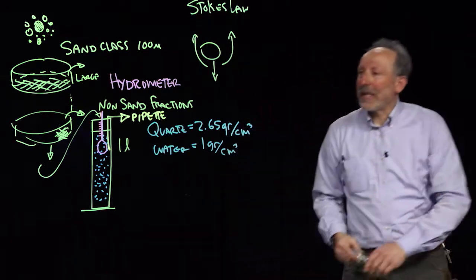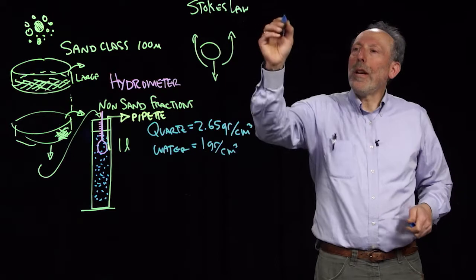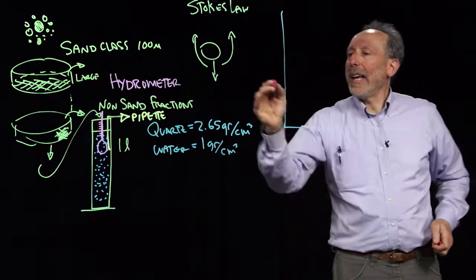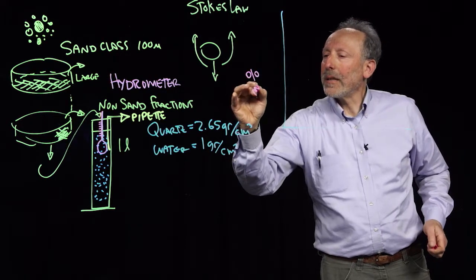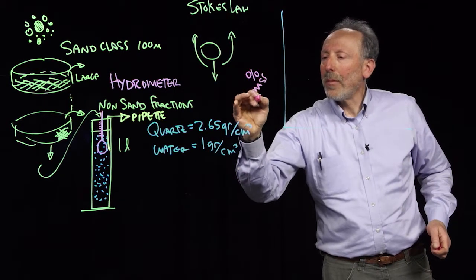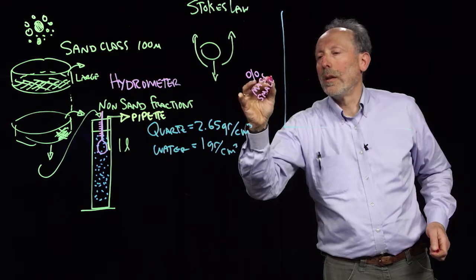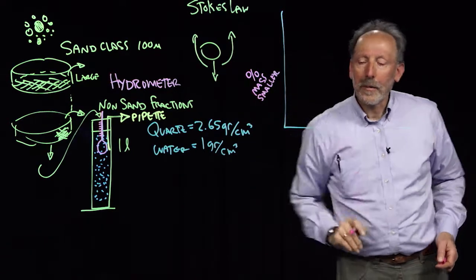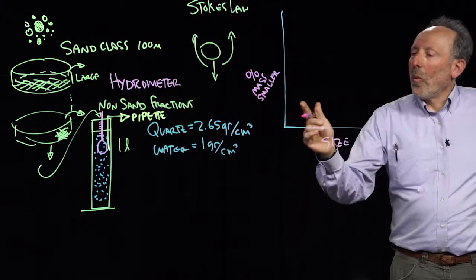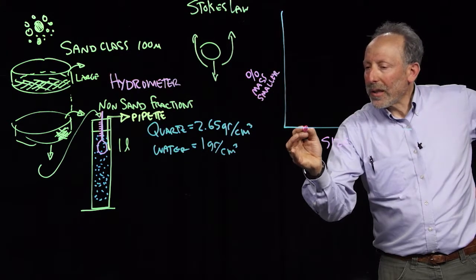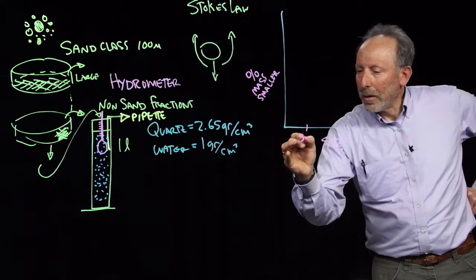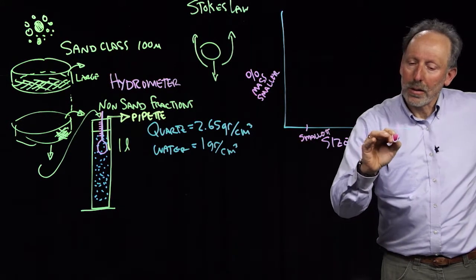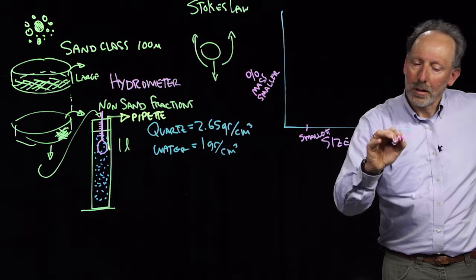So, now we have this particle size distribution, what do we do with it? What we're going to do is we're going to make a plot that has percent mass smaller and then we're going to have the size here. So what we're going to do is say for the very smallest size, this is going to be the smallest particle. And this is going to be the largest.